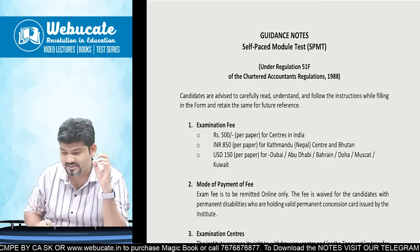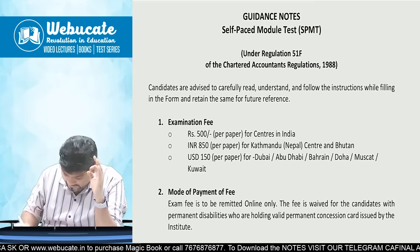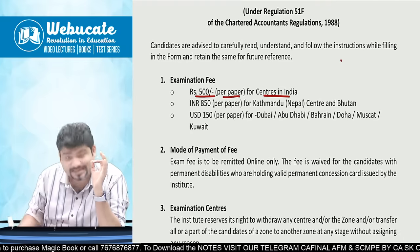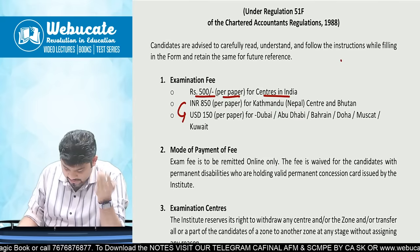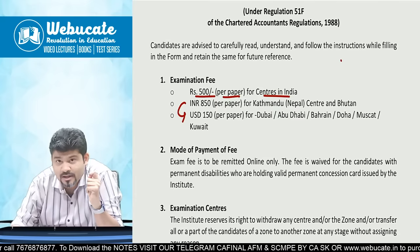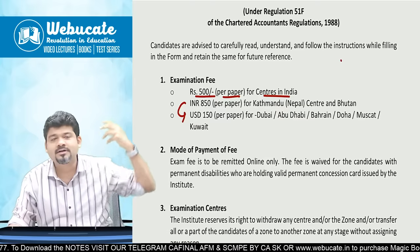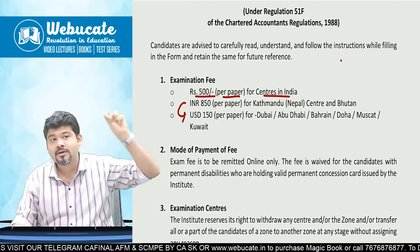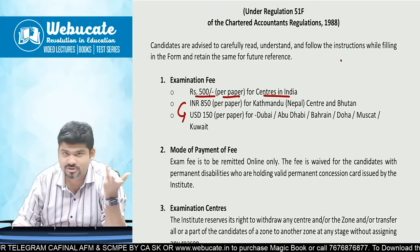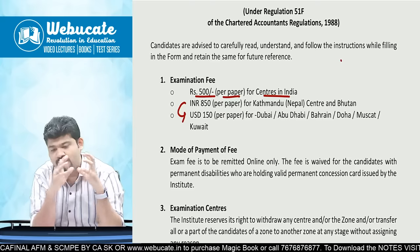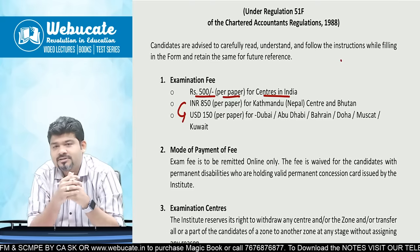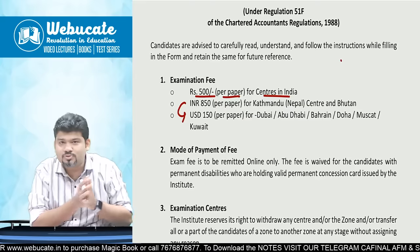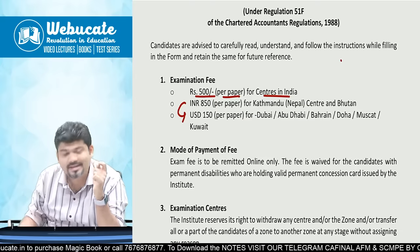The exam fee for the Self-Paced Module Test (SPMT) for CA Final students is ₹500 per paper for centers in India, ₹850 for Nepal, and USD $150 for Dubai. Some students believed the exam would be free, but while e-learning is free, the examination always comes with a cost because the institute is setting up centers — including possibly at the National Stock Exchange. This makes it important to clear in the first attempt.